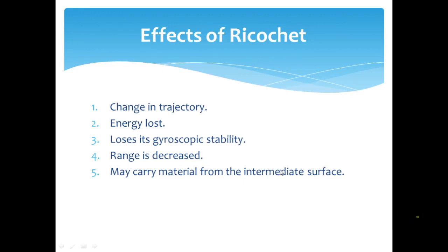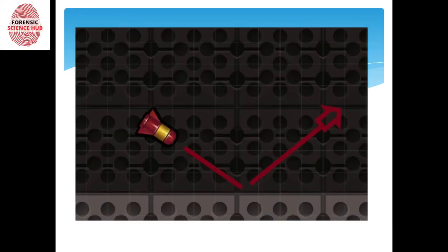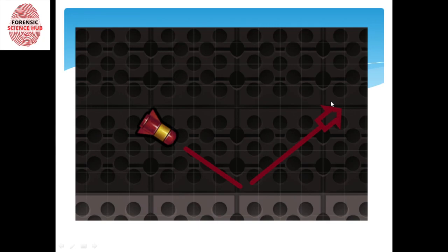Next is energy loss. When the bullet strikes the surface, it initially tries to penetrate and continue its normal path, but that doesn't happen because it doesn't have enough energy to enter inside. Yet it tried, which leads to a loss of energy. So this process also leads to loss of kinetic energy of the bullet.